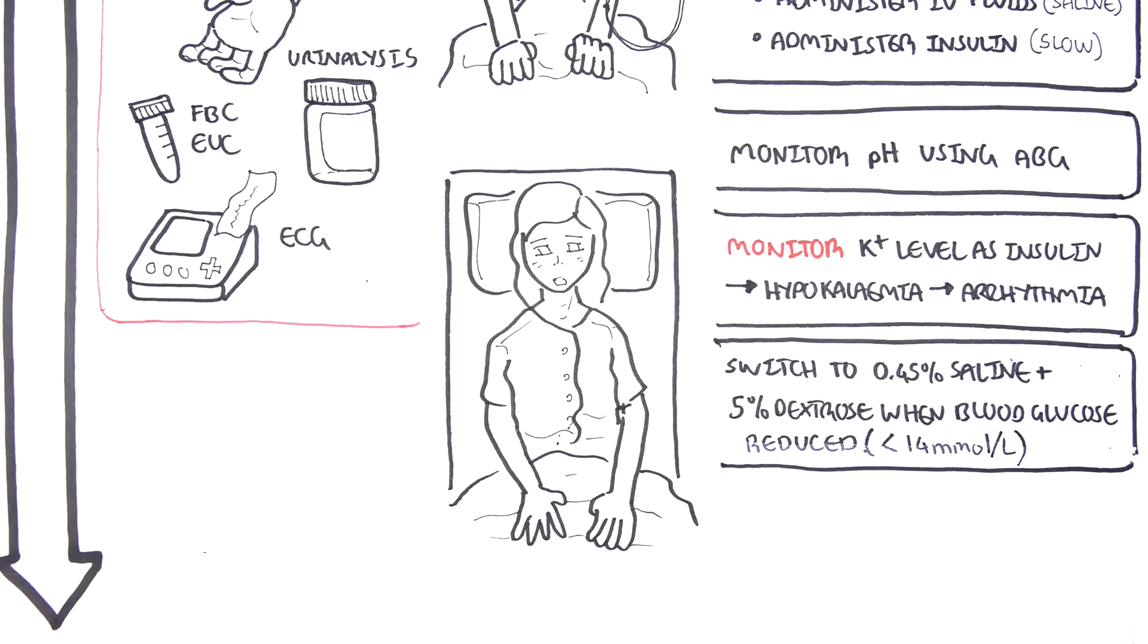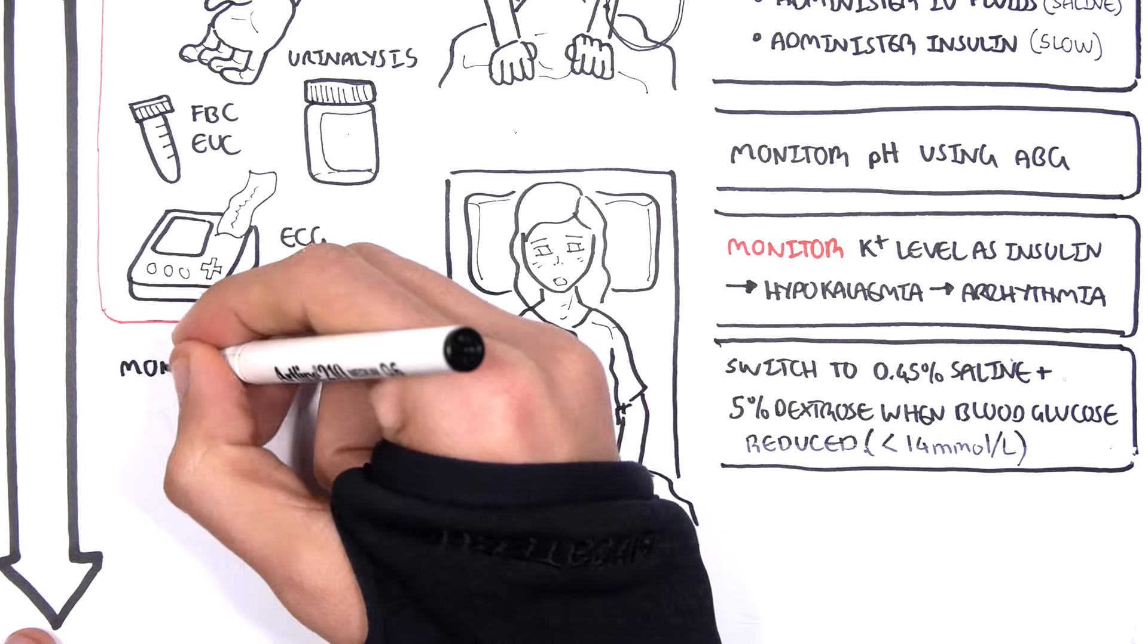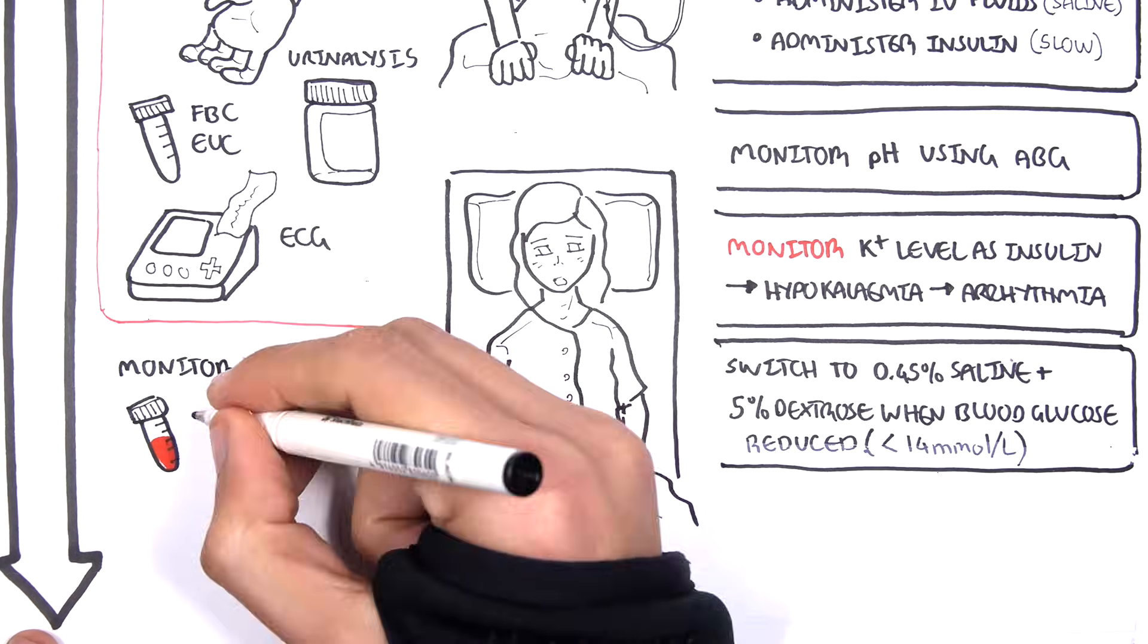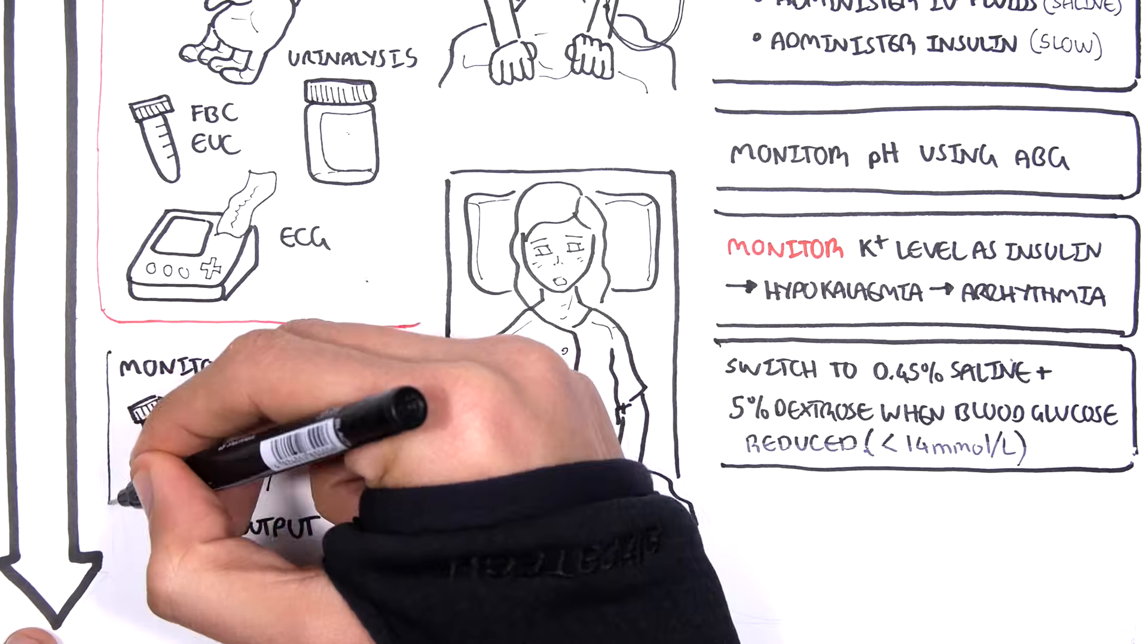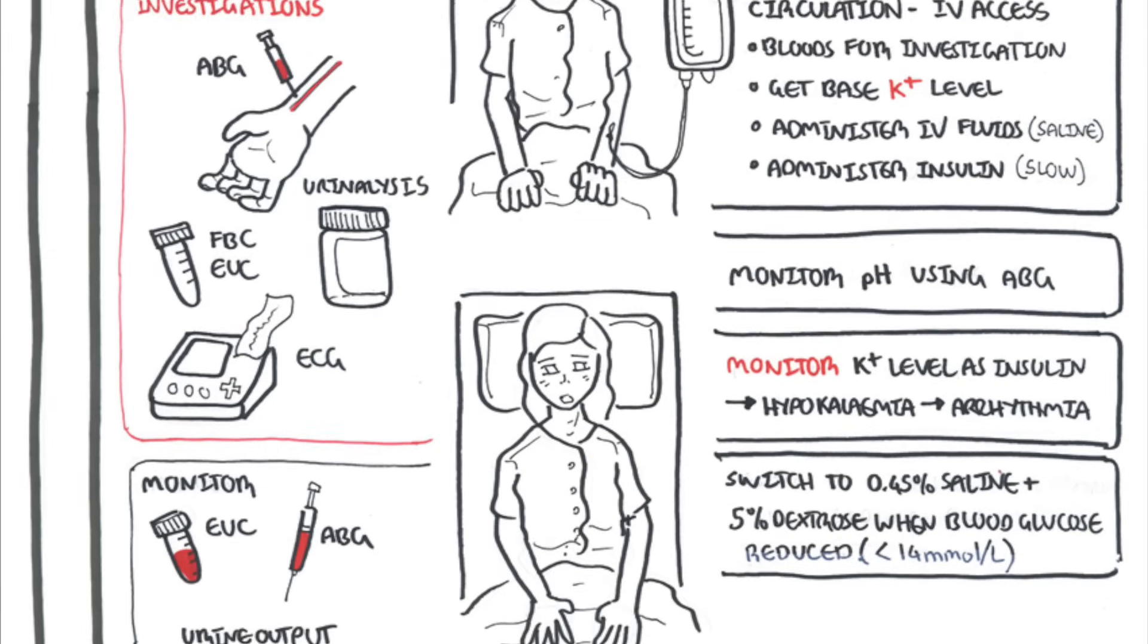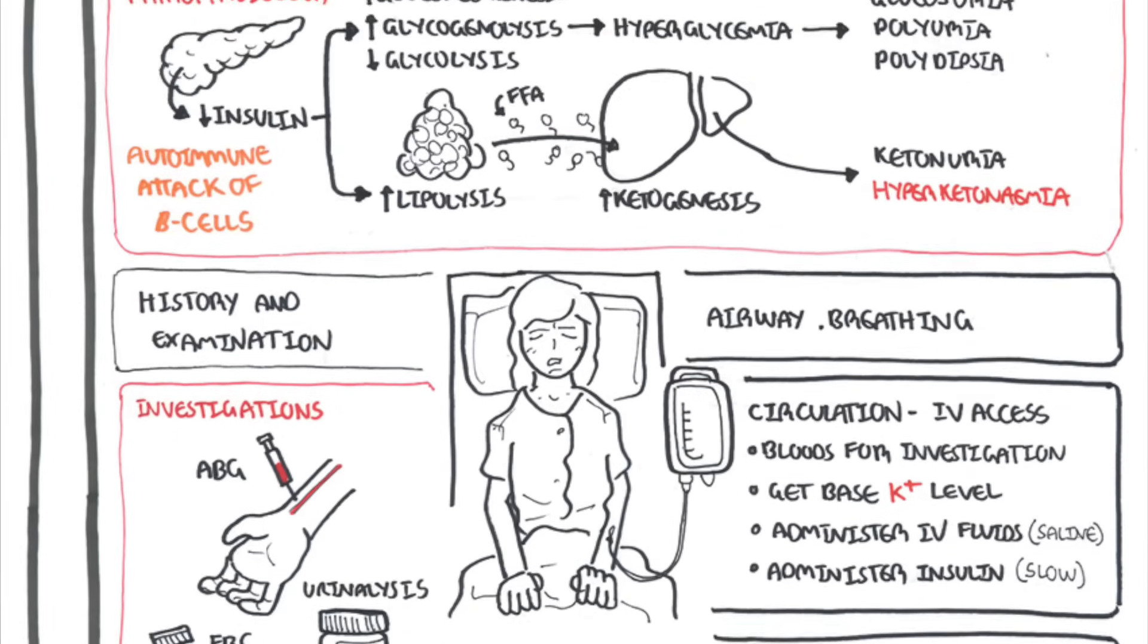Again, for diabetic ketoacidosis, monitoring is essential. Monitor bloods, EUCs, perform ABGs to check for pH, and monitor urine output and also the changes in urine pH, glucose and ketones.